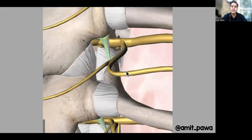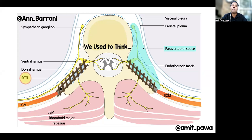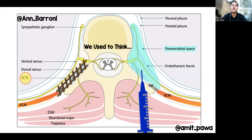Looking at this approach, this is how we would be approaching the paravertebral space if we're coming in from a transverse in-plane orientation. You can see the proximity to the lung or the pleura. In the past, we used to think that the superior costo-transverse ligament acted as a gateway — a barrier to the paravertebral space — and we had to break through that barrier in order to get local anaesthetic into the paravertebral space.